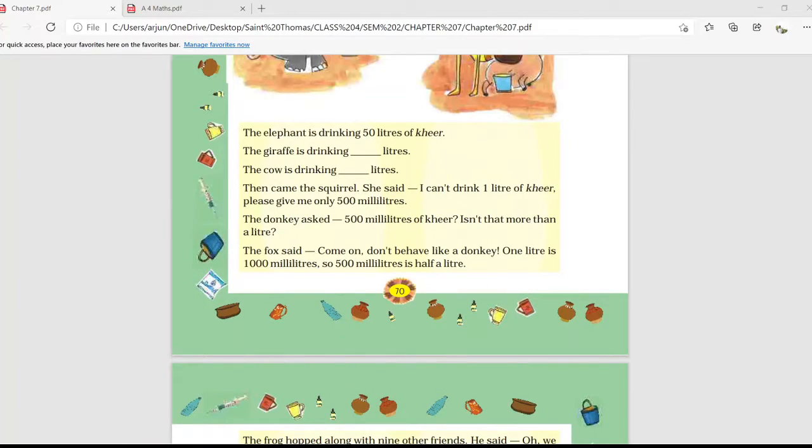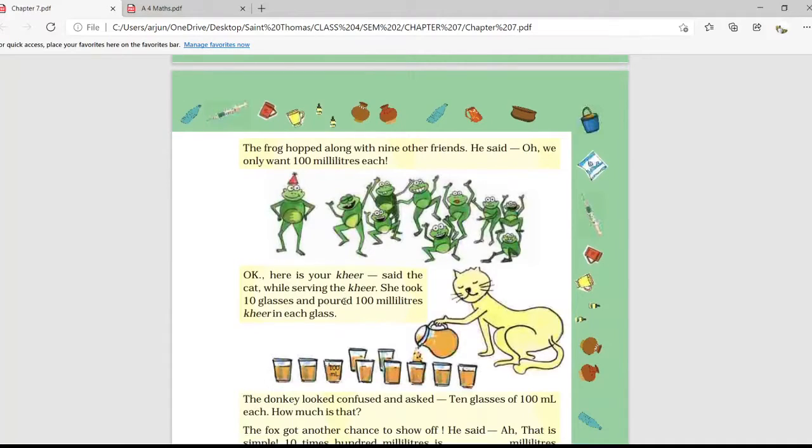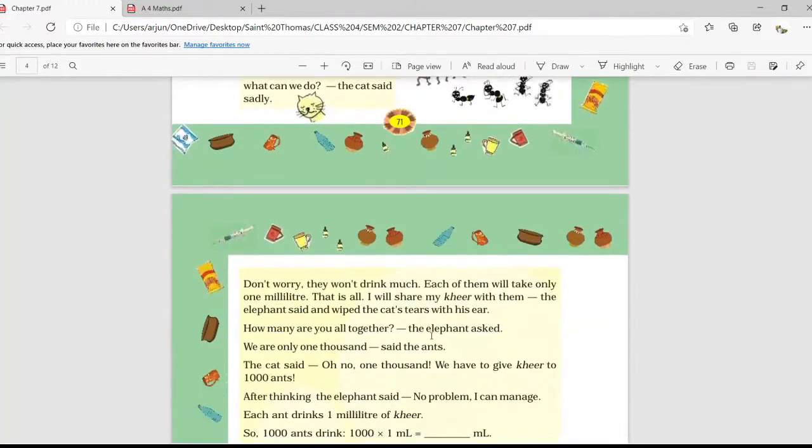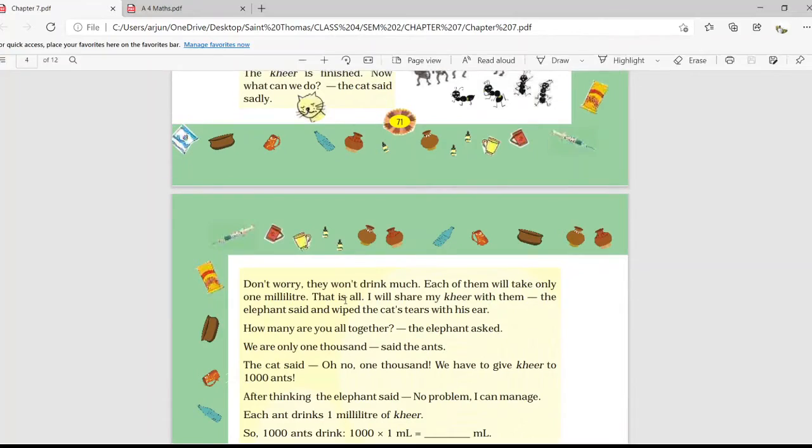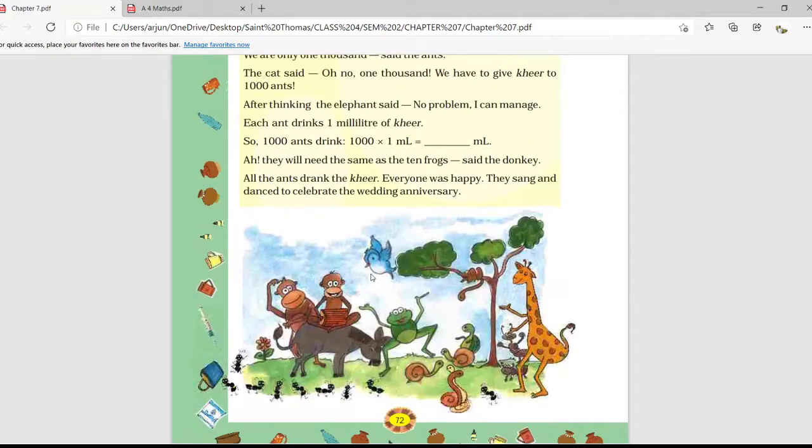Then there was one conversation between the squirrels and fox. Then the frogs came, 10 frogs, and each needed 100 milliliters, so total how much milliliters they want? 1000, which is one liter of kheer. Then the ants came, they also needed kheer. Who gave the kheer to the ants? The elephant. By this story we learned to divide milliliters into several milliliters, then to convert milliliters to liters, then from liters to milliliters.